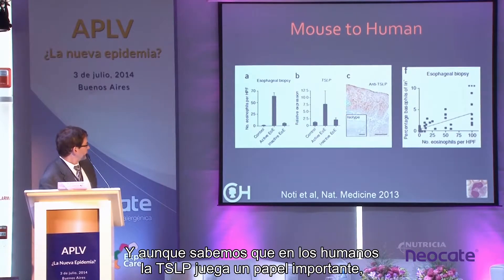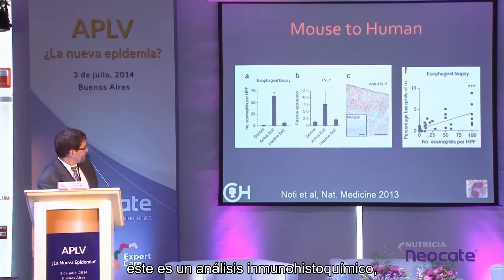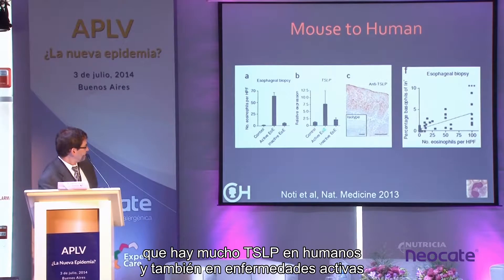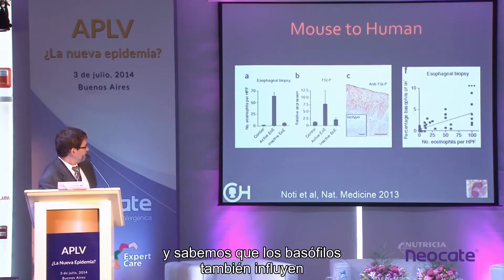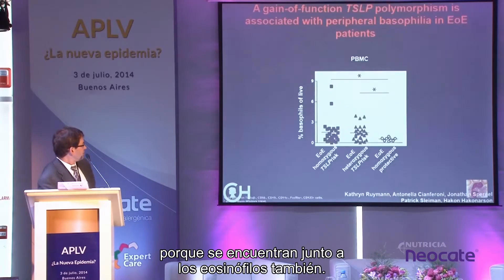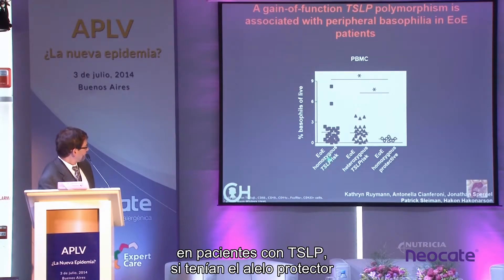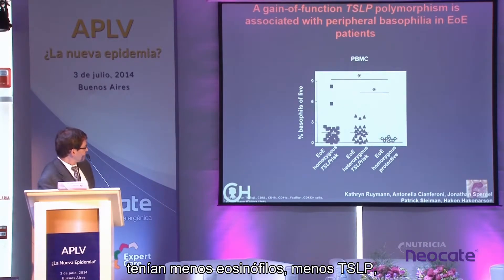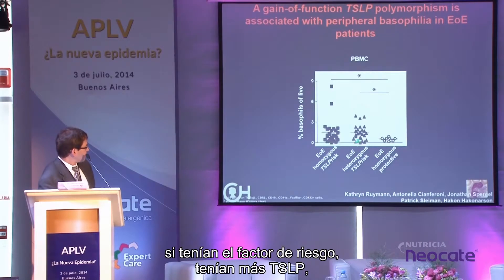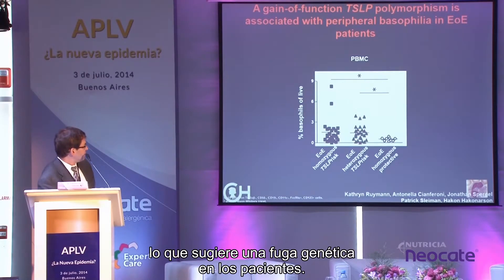In humans we know TSLP plays a large role — immunohistochemical staining shows abundant TSLP in active disease. Basophils also appear to correlate with eosinophil levels. Genetically, patients with the protective TSLP allele have less TSLP and fewer eosinophils, while those carrying the risk allele have greater TSLP — further confirming the genetic link in our patients.